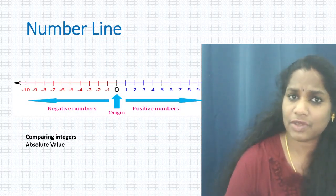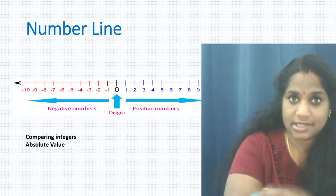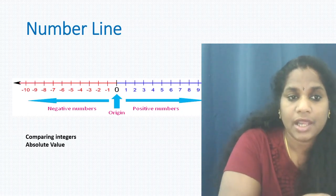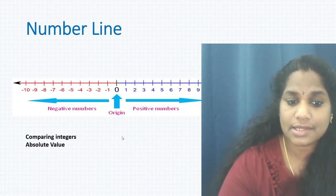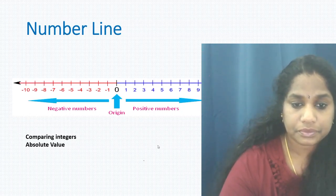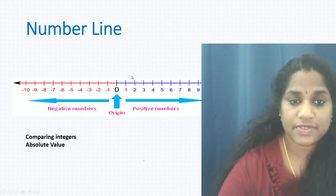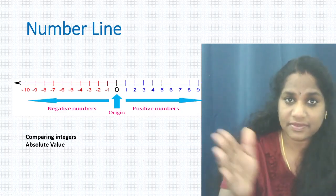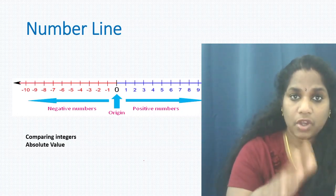Now let's go to the next part: the number line. We use the number line to visualize all these numbers — we can do addition, subtraction, and more easily, and see how numbers change. The number line is a straight line where the midpoint is zero. All positive numbers are towards the right-hand side of zero, and negatives are towards the left.